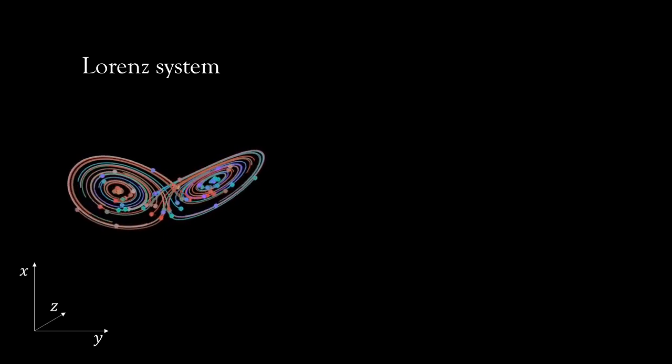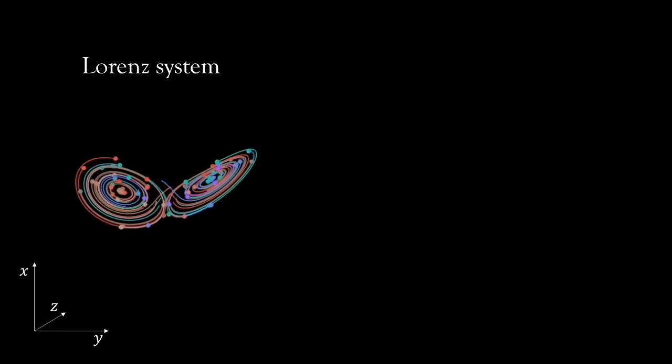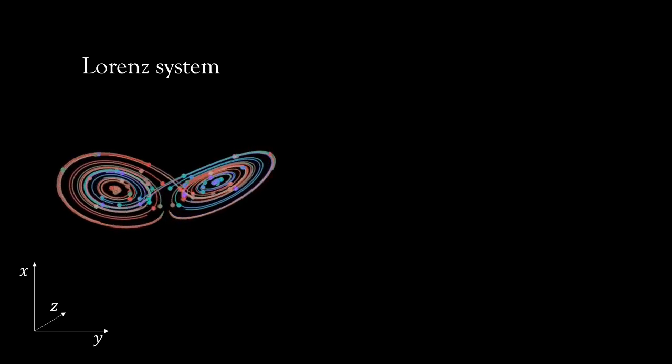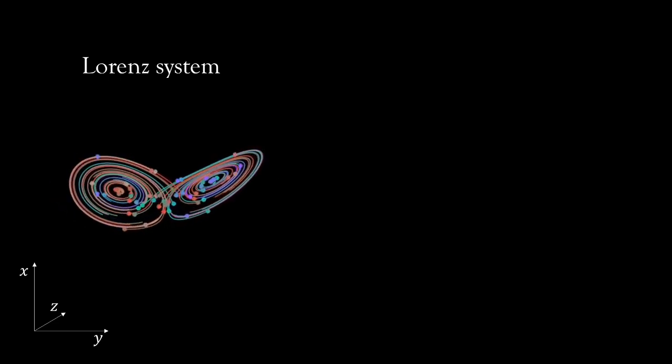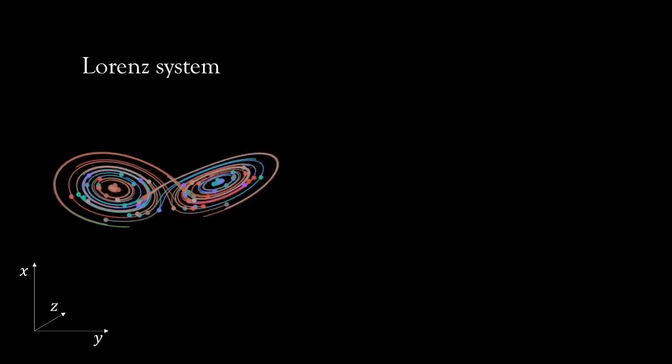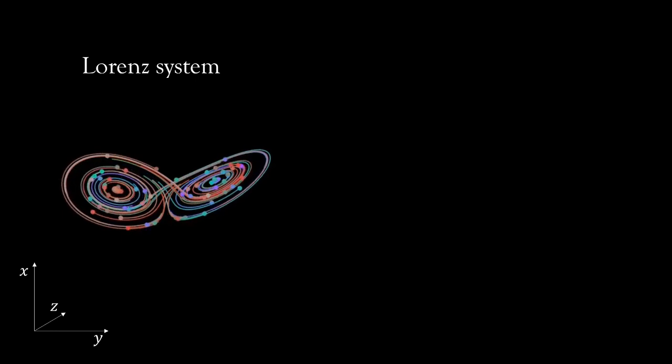Another example, the Lorenz system, which I'm currently showing on the screen, is something most people that have heard the words deterministic chaos have probably seen already. I don't want to go into too many details, but for example here, it would be very hard to identify the stretching mechanism without going into mathematical details.